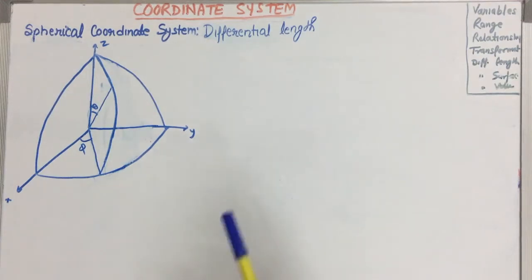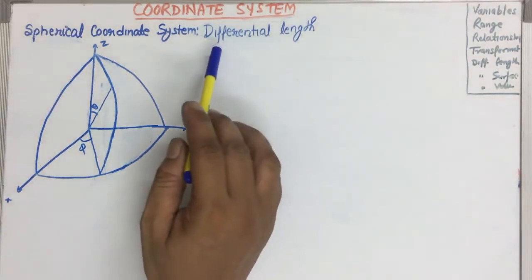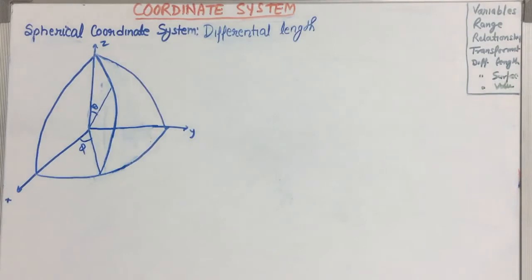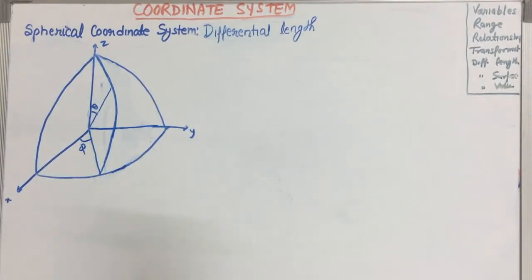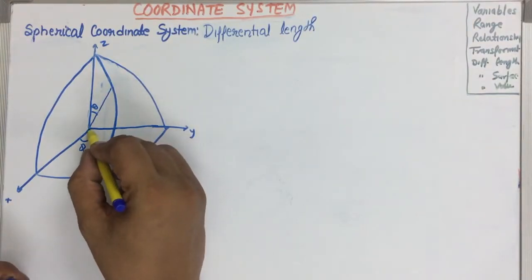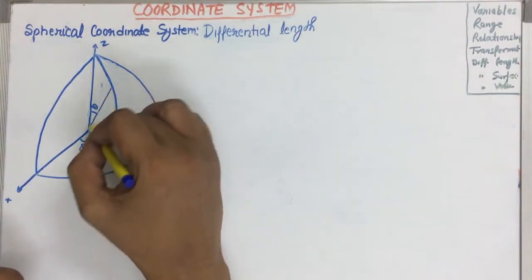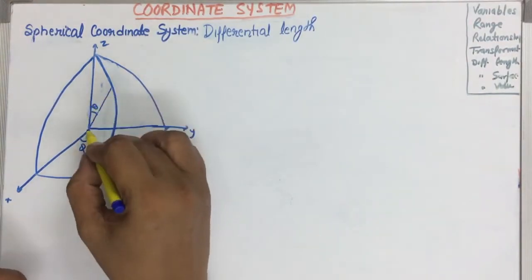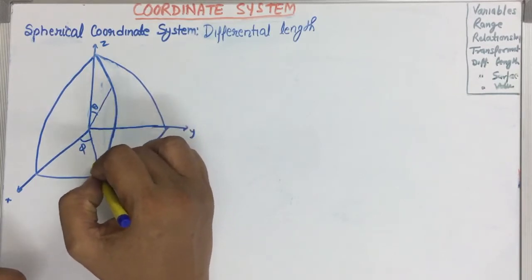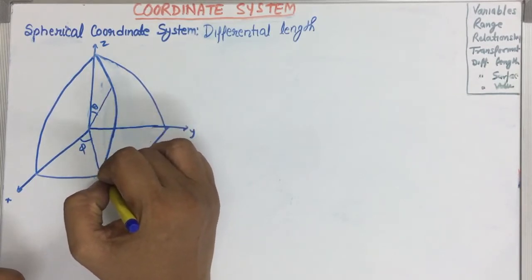Now we are interested to find the differential length in case of a spherical coordinate system. For that purpose we have considered a part of the sphere. This is the radius of the sphere and this is the projection of that at the XY plane.